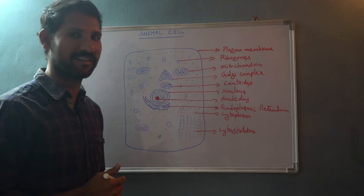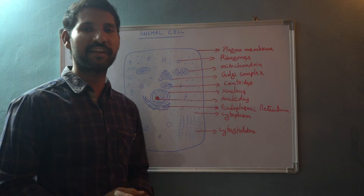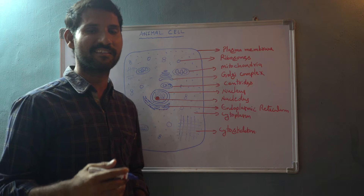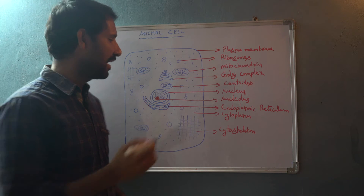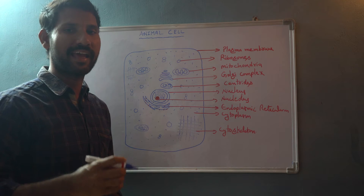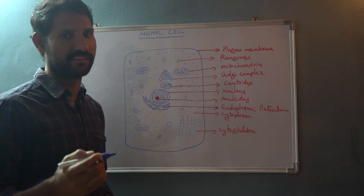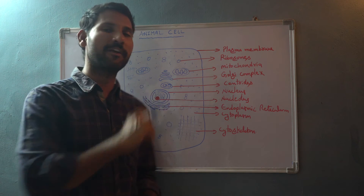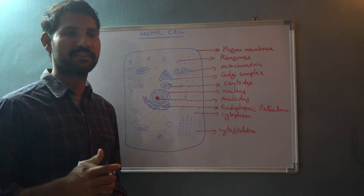There are two types of endoplasmic reticulum: rough endoplasmic reticulum and smooth endoplasmic reticulum. Rough endoplasmic reticulum helps in the synthesis of proteins, whereas smooth endoplasmic reticulum helps in the synthesis of lipids.